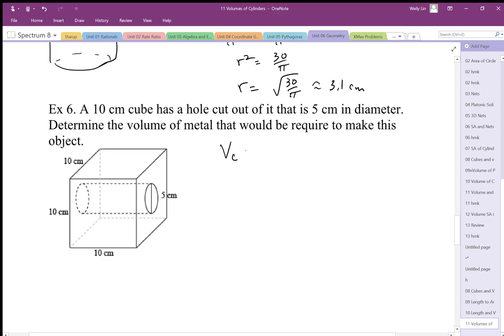We want to figure out the volume of the cube, and then subtract the volume of the cylinder. So the volume of the cube is going to be 10 by 10 by 10, or 10 cubed.